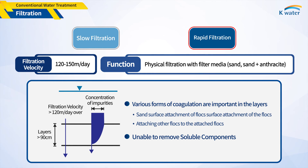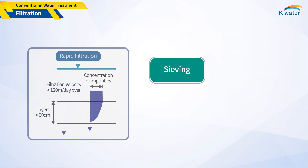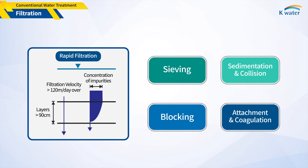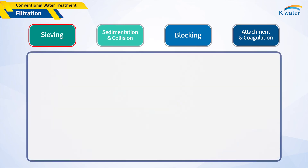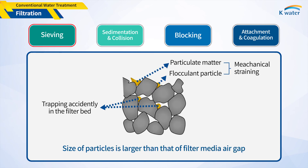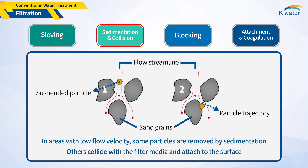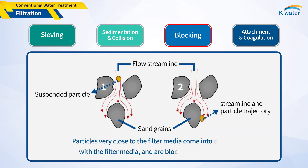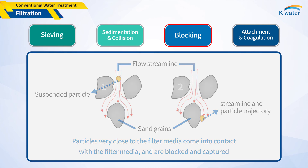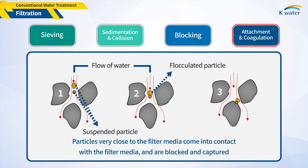Rapid sand filtration uses a coagulant to turn colloids into flocs and filters them at a relatively high rate; it is mainly used in large water treatment systems. Coagulant must be injected; otherwise, natural particles with negative charges pass through without attaching to the media. The rapid filtration process captures microflocs in the filter layer by sieving, sedimentation, collision, blocking, attachment, and coagulation to produce clean filtered water. Sieving is important for direct filtration: particles larger than the filter media air gap are captured and removed. In areas with low flow velocity, some particles are removed by sedimentation, and others collide with the filter media and attach to the surface. Particles very close to the filter media are blocked and captured, while flock particles are attached by coagulation, chemical coherence, and physical force between the particles and the filter media.